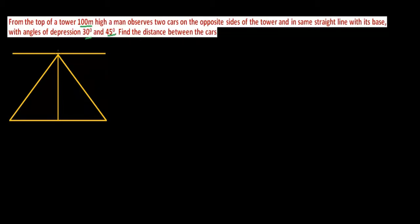Let's suppose the person is here. The man was standing here. Let this point be A. The height of the tower is 100 meters, it is given in the question. Let this point be B. Let the two cars are here. So this be C, let this be D.